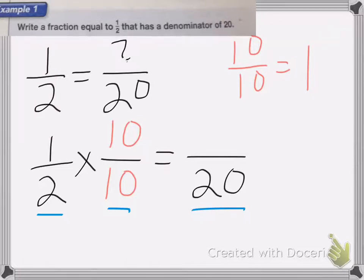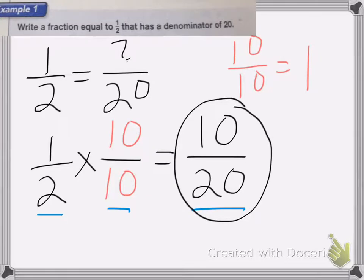So we now need to multiply the top to figure out our missing number. So 1 times 10 is 10. So 10/20ths is the correct answer, and it is equal to 1/2, because 10 is half of 20.